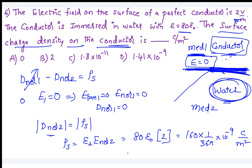So the answer is D. You are going to get 1.41 times 10^-9. Do you have any questions on boundary conditions?